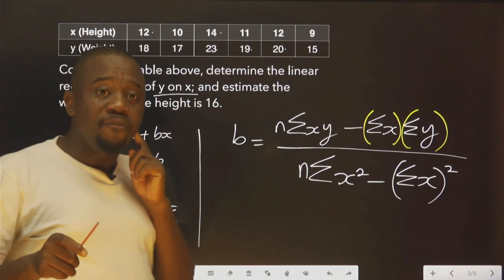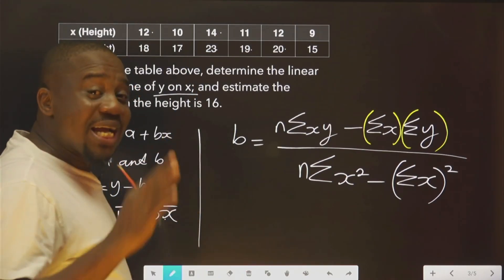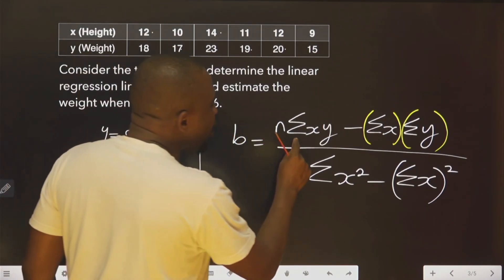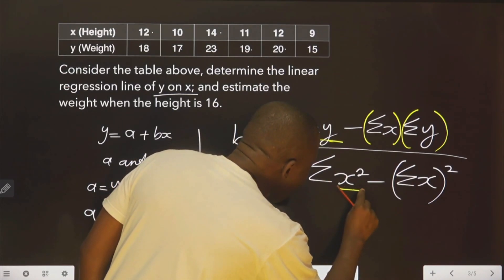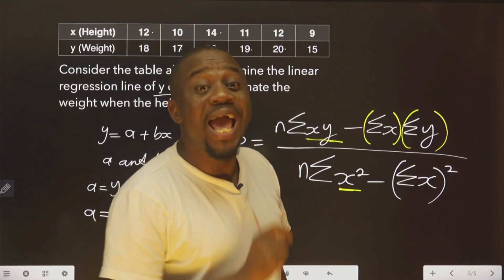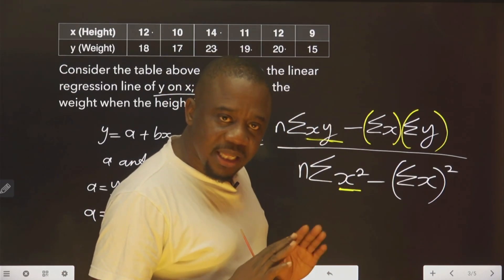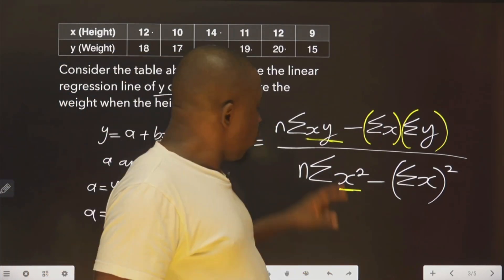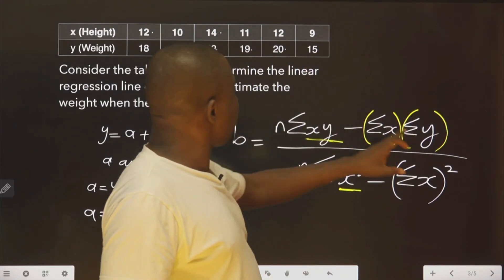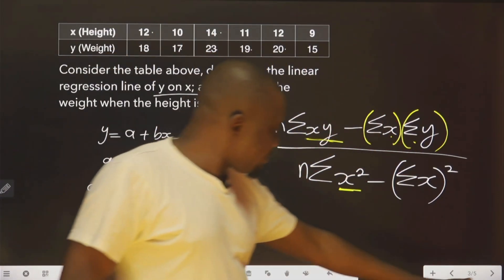So what we are going to do now is we need to create separate columns. There will be a column for the multiplication of this, a new column. There is going to be another new column for x square. That is, the two new columns we need to get. We already have column for x, we have column for y.